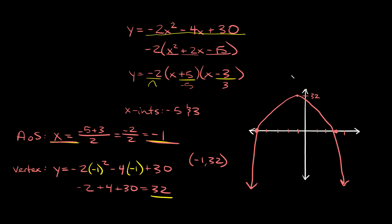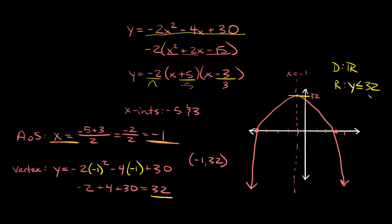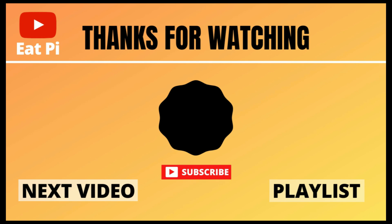The axis of symmetry is at x equals negative 1, shown as a dashed line. For the domain and range: the domain is all real numbers. The range has a maximum value at 32, and the parabola goes in the negative infinity direction, so all y values are less than or equal to positive 32. If you found the video helpful, leave a thumbs up, and if you have questions or want to see more examples, let me know in the comments.